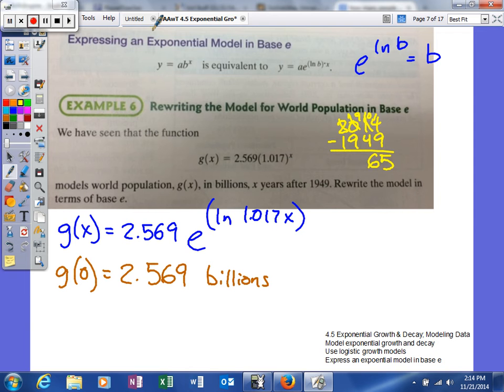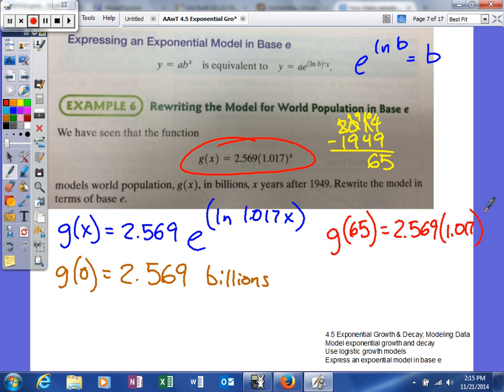All right, so we're going to take that 65, and now we're just going to plug that into our equation. I'm actually going to use this one right here. It's given to us. So it'll say g of 65 is equal to 2.569, and then 1.017 raised to the 65th power.